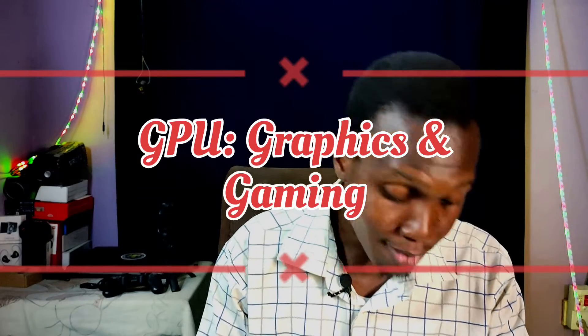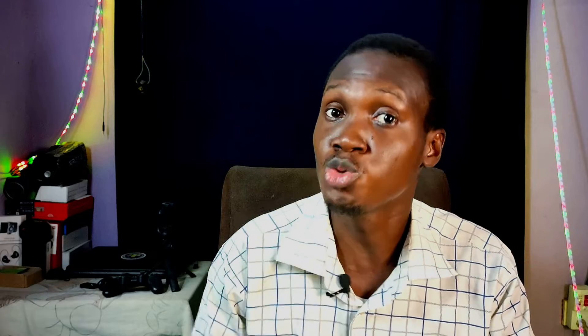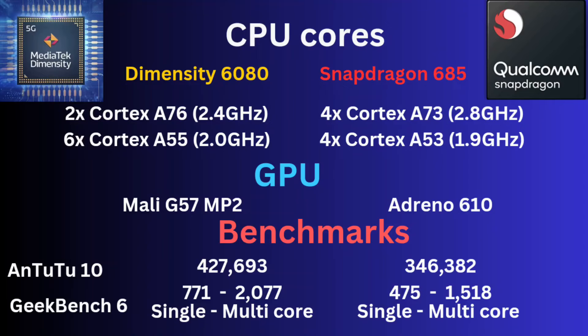It's the same story on the GPU side. The Mali-G57 MP2 GPU on the Dimensity 6080 is actually a lot more powerful than the Adreno 610 on the Snapdragon 685. Both on the CPU and GPU side, the Dimensity 6080 is notably better. That said, the Snapdragon 685 still delivers decent performance and benefits from a lot of software optimization.